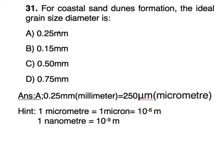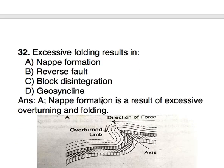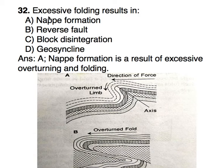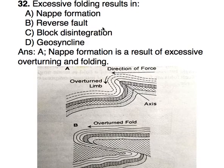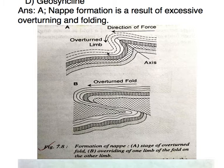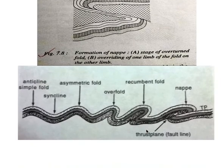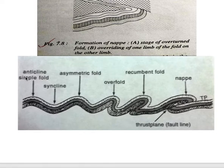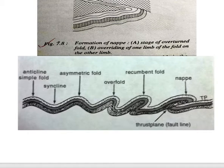The next question is: excessive folding results in nappe formation. We have already discussed how a nappe is formed. We can recollect our understanding from this diagram. Different types of folds — like anticline, syncline, and asymmetric — their limbs are not symmetric. When overfolded due to excessive force, both limbs become parallel.